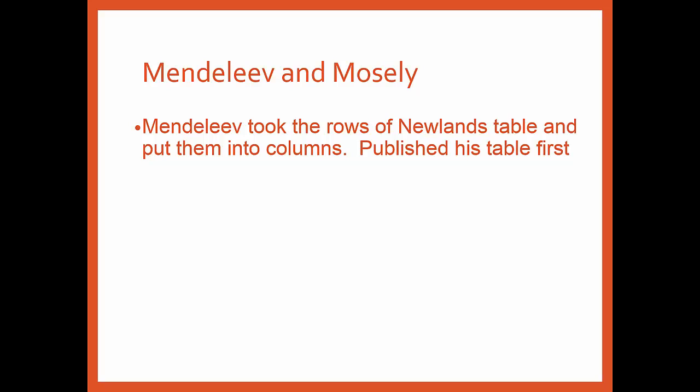Then we have two people, Mendeleev and Moseley. Mendeleev took the rows of periodic table and he actually looked at the properties and put them into the columns. He published his table first, hence why he gets a lot of credit. The key thing with Mendeleev, he left room for elements that he predicted should exist, and later, yes, they did exist and they fit into the periodic table. He used chemical properties and physical properties to arrange them.